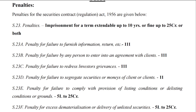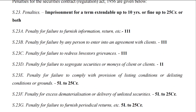Then we have the main penalties from 23A to 23H. Section 23A is the penalty for failure to furnish information, return, etc., which carries a 'triple one' penalty — not less than 1 lakh rupees but extendable up to 1 lakh rupees each day of offense, subject to a maximum of 1 crore rupees. Section 23B is the penalty for failure by any person to enter into an agreement with clients, which also carries the triple one penalty.